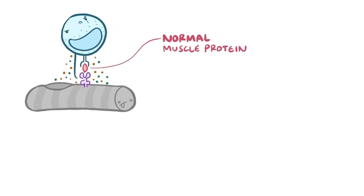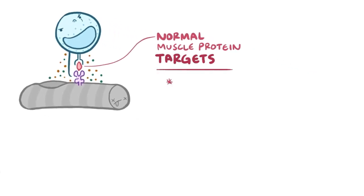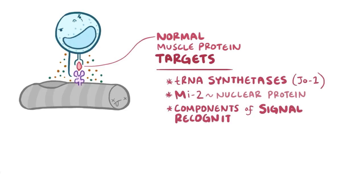The specific antigenic targets in polymyositis include tRNA synthetases, also called JO1, a nuclear protein known as MI2, and components of the signal recognition particle, or SRP for short, which helps with protein trafficking within the cell.